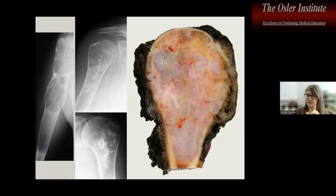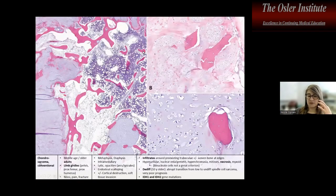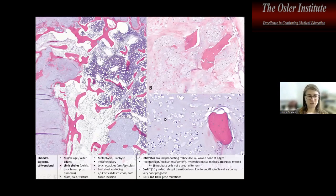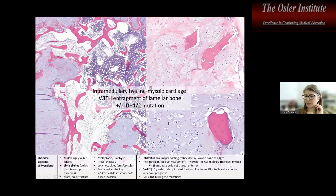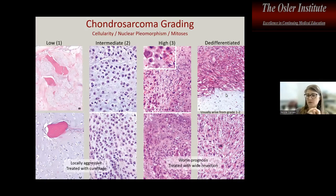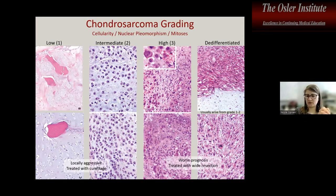When a cartilaginous proliferation bows the surface and infiltrates the marrow cavity, it is chondrosarcoma. It entraps pre-existing lamellar bone and ranges from low to intermediate to high histologic grade: low is paucicellular, intermediate is moderately cellular, high is hypercellular with nuclear pleomorphism. Dedifferentiated chondrosarcoma arises as a high-grade spindle cell sarcoma adjacent to a grade 1 or 2 chondrosarcoma. These are treated primarily with resection, as chemotherapy and radiation are ineffective due to hypovascular cartilage.